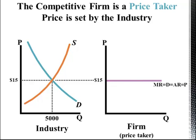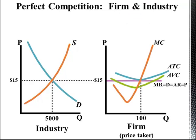Let's add the cost curves to our graph. Marginal cost is a Nike swoosh — or a big check mark, whichever you prefer. ATC and AVC both kind of look like smiles. They cross the marginal cost line at their lowest point.